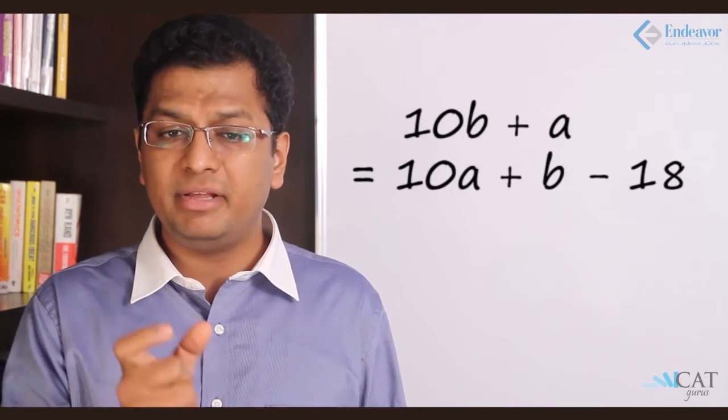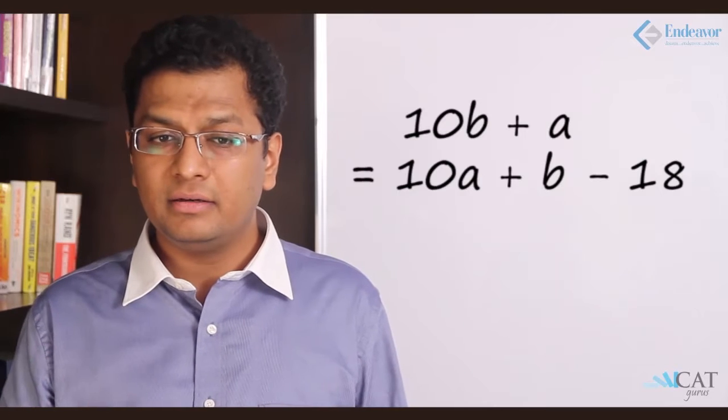We know that there are 10 numbers; if the average drops by 1.8, then the total drops by 10 into 1.8, which is 18. So the difference of 10a plus b and 10b plus a is nothing but 18. The original number was higher. So 10a plus b minus 18 will give me 10b plus a. Solving this, we get a minus b equals 2, which means the difference of the two numbers is 2.